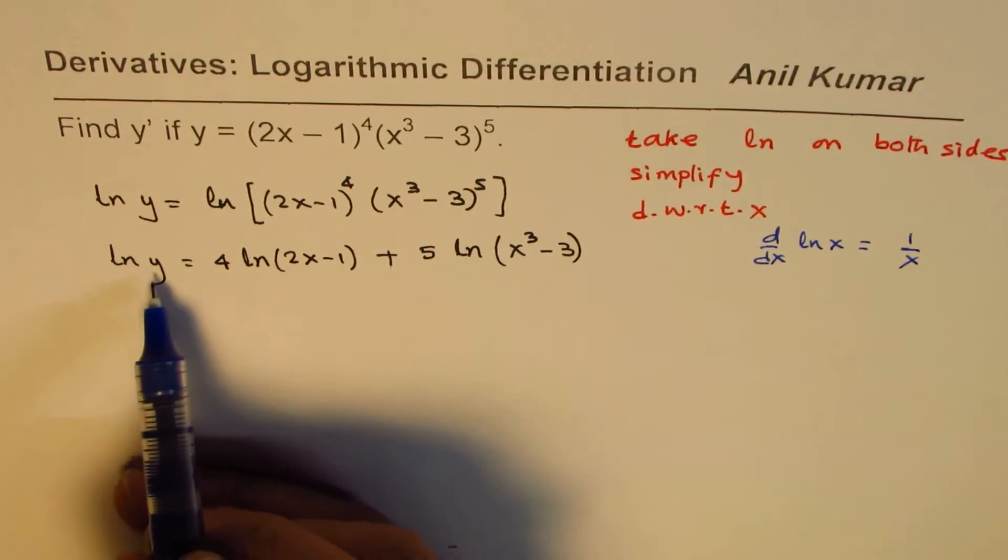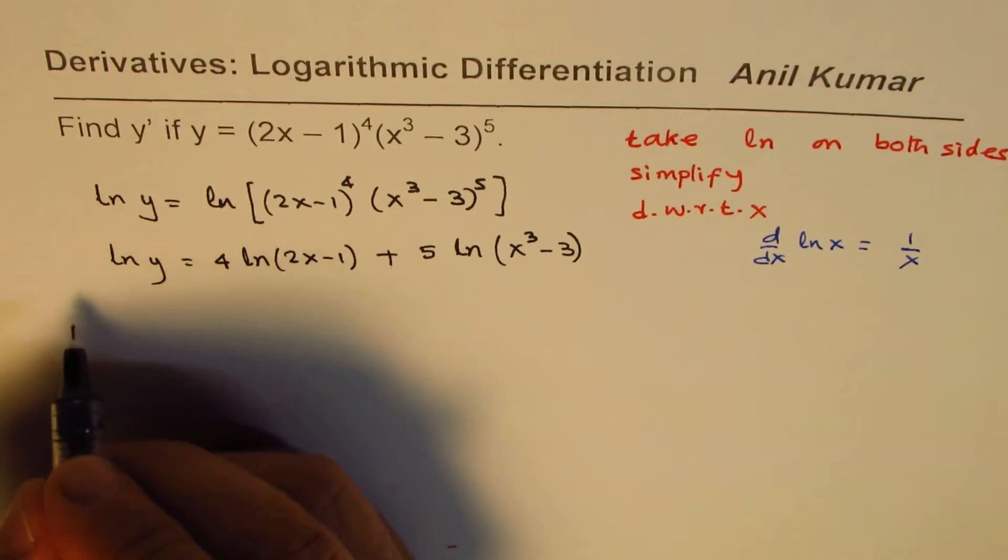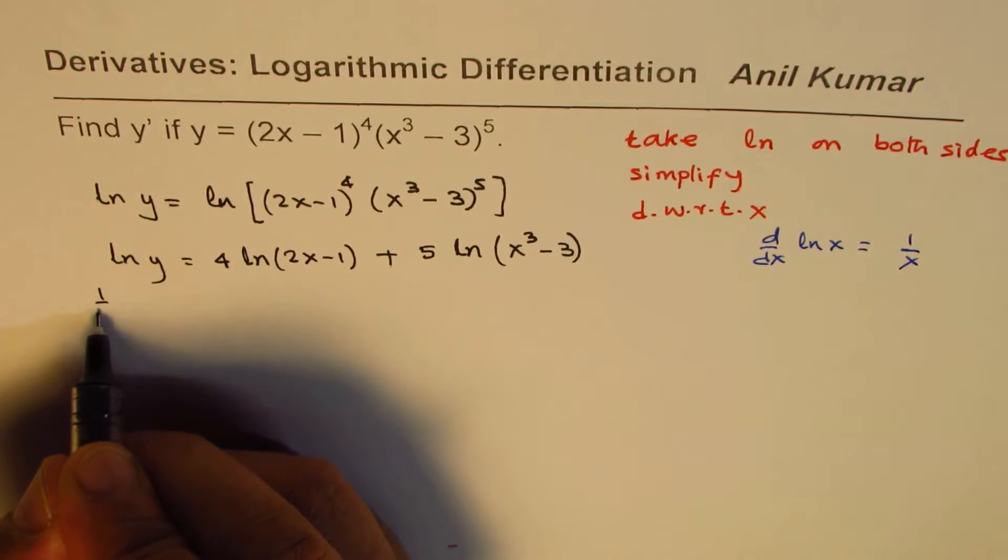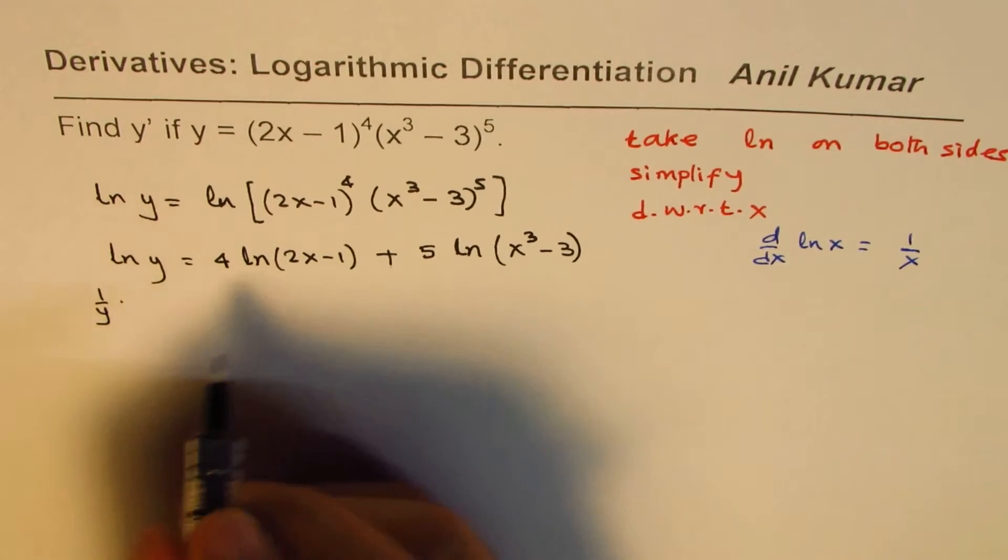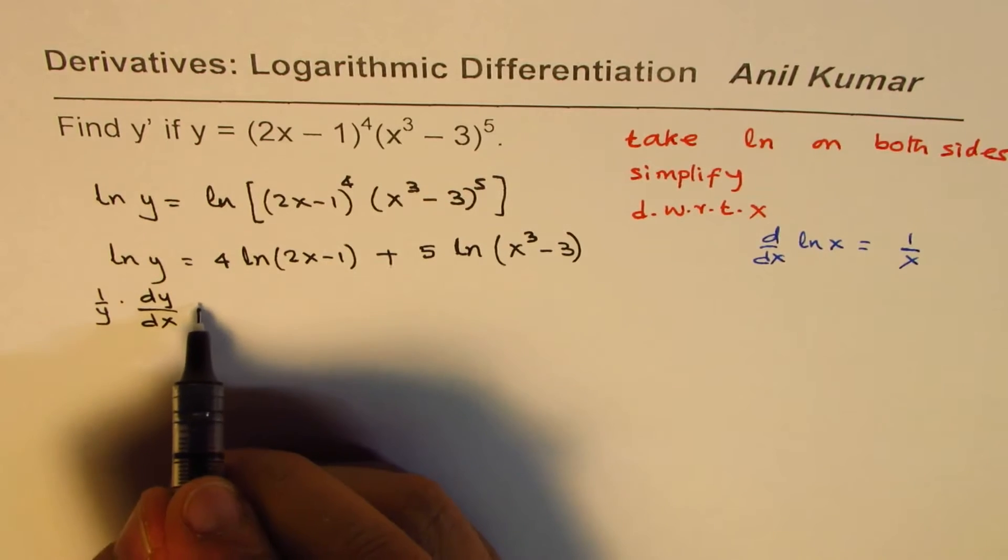For ln y, it will be (1/y)(dy/dx), correct? So we can write this as (1/y)(dy/dx). Now,